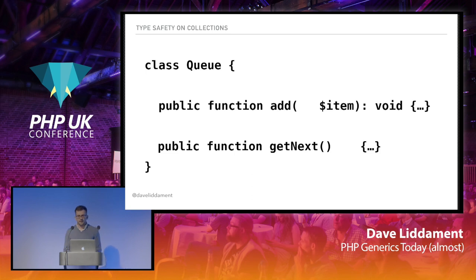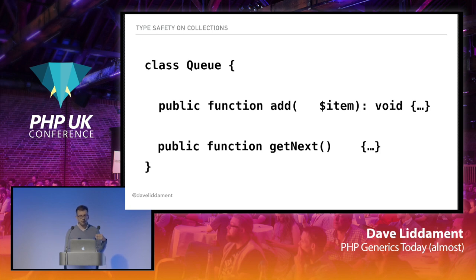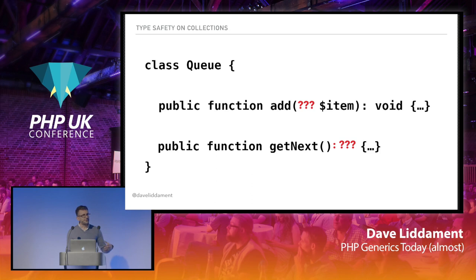So what about generics? Imagine we have a class that represents a queue. A queue could contain anything — delegates waiting for lunch, jobs waiting to be executed, a queue of strings, a queue of users, a queue of books. For this very simple queue, we've got two methods: one adds something to the back of the queue, and get-next takes a thing from the front. The issue is at the time of writing the queue class, we don't know the type of data that queue will hold, because the queue could be used in many different ways.